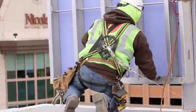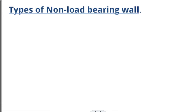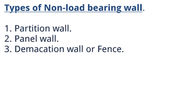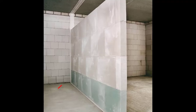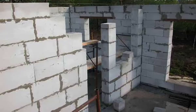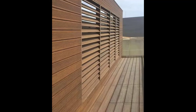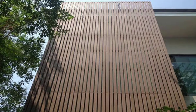Now, the types of non-load-bearing wall. Under non-load-bearing wall, you have the partition wall, you have the panel wall, and you have the demarcation or fence wall. A partition wall is an interior non-load-bearing wall which is provided to divide a large space or area into two or more sections. They only carry their self-weight and nothing else. A panel wall is an exterior wall, but it should never be confused as a load-bearing wall — they are exterior non-load-bearing walls generally made with wood, used for aesthetic purposes, supported at each story.